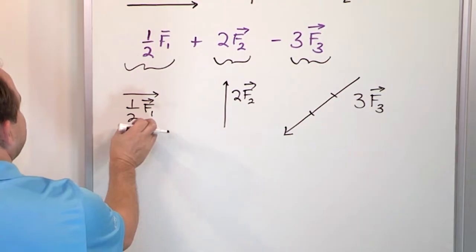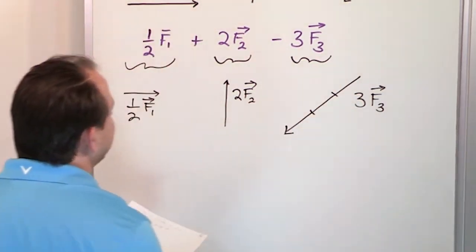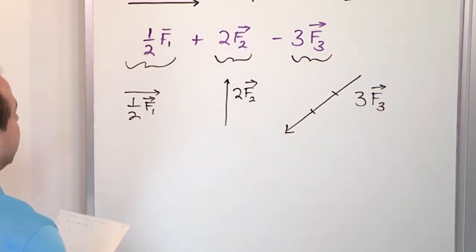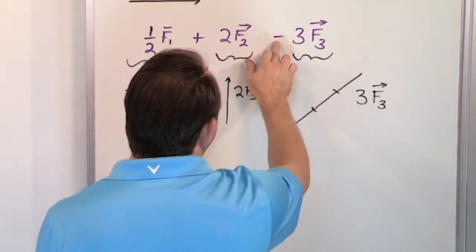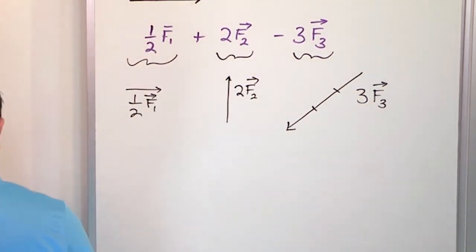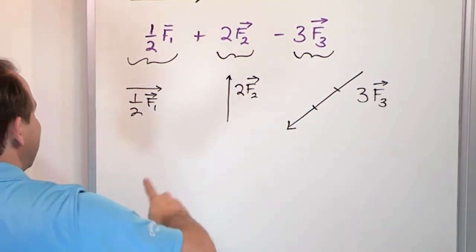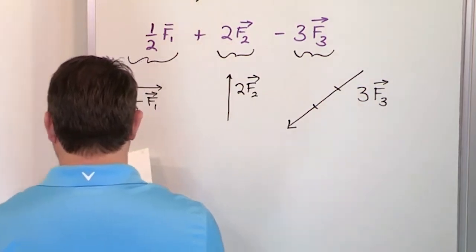So all I've done in the first step is I've done the scaling of multiplying by a scalar. Now, if this were all vector addition, I could just add them, but I have a problem because I have this subtraction here. So what I want to do in the next step is I want to start writing down my vector equation a little bit.